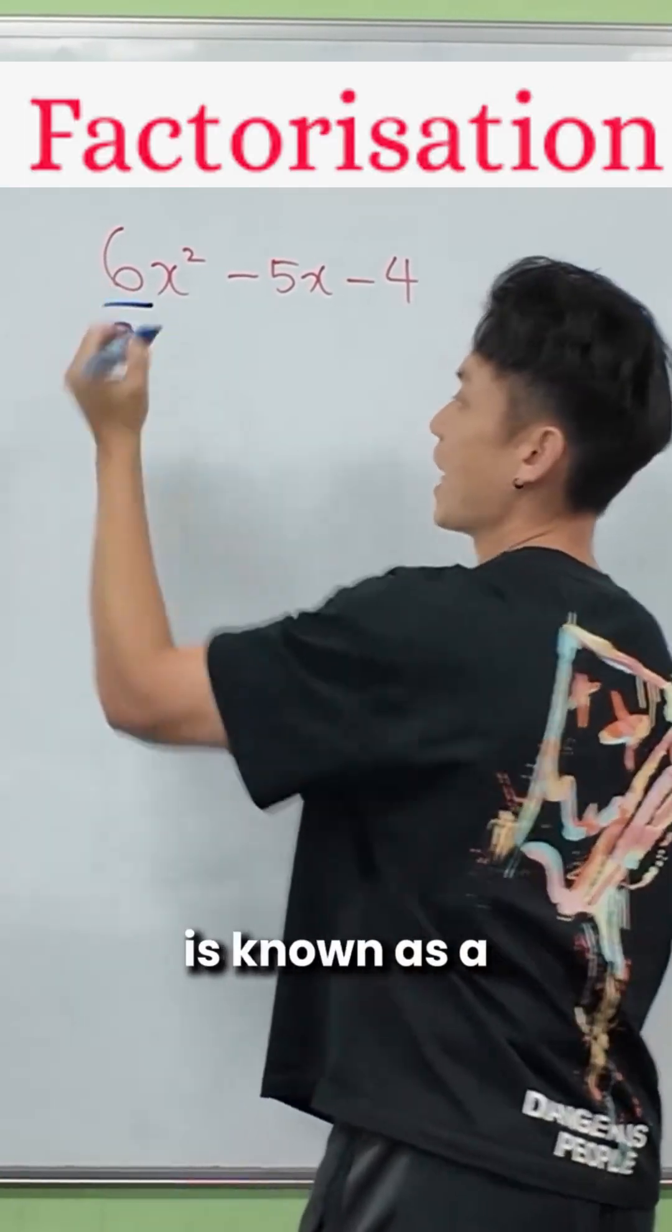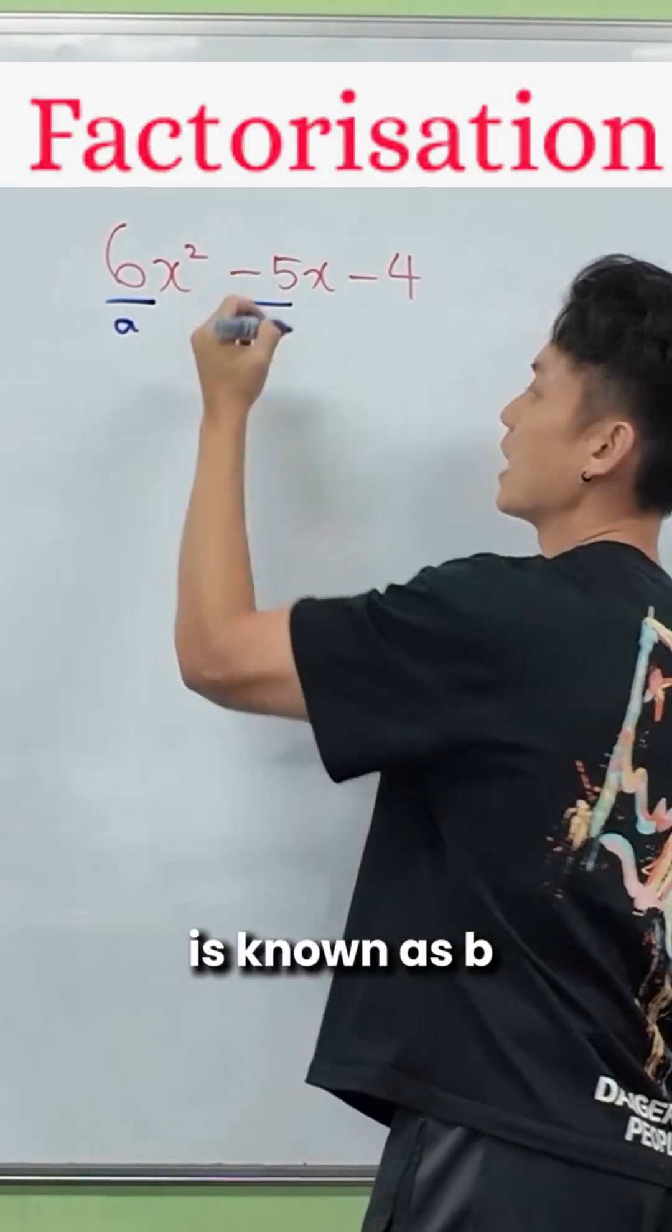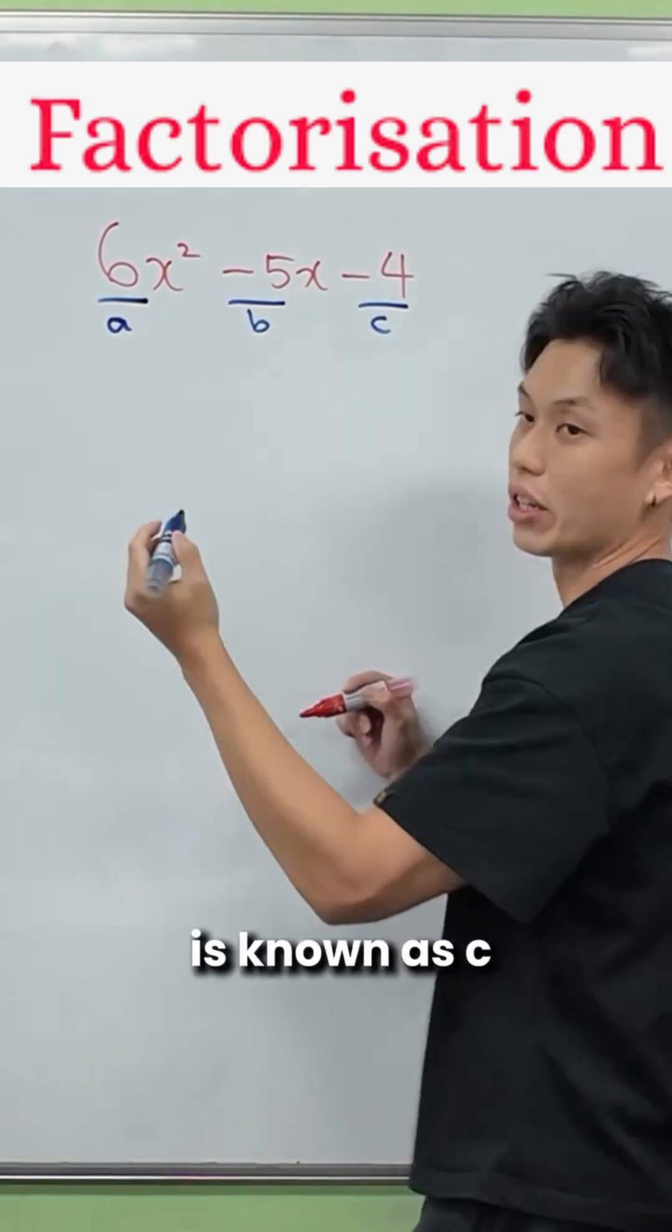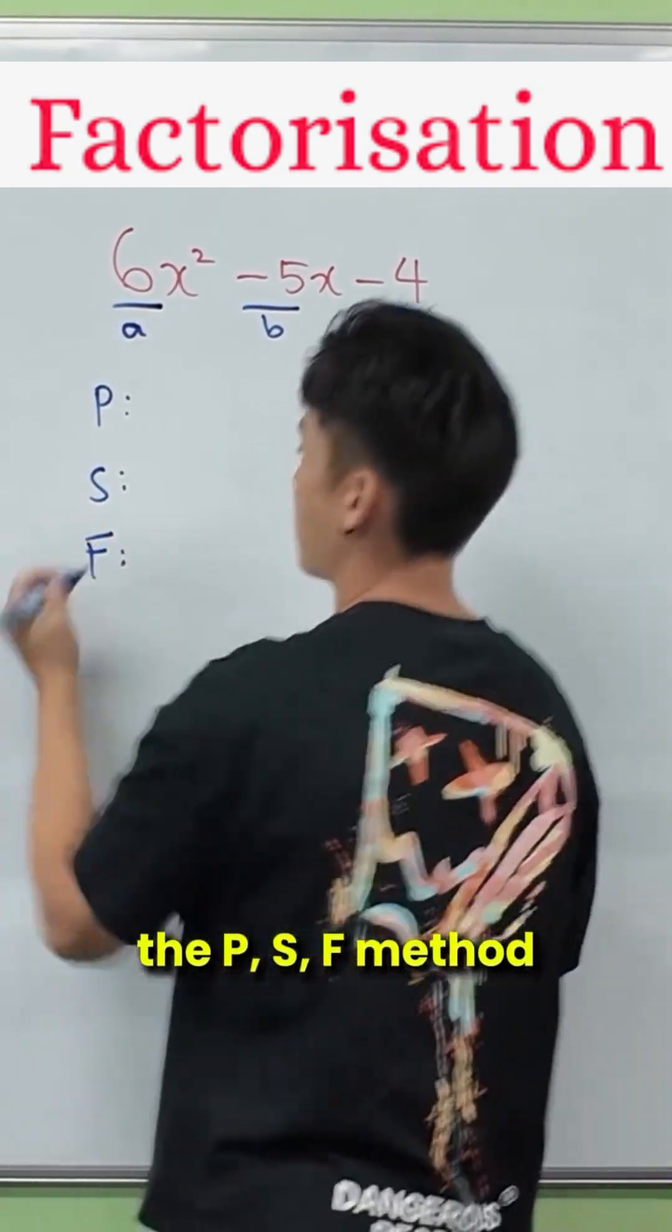Remember that the number in front of x squared is known as A, the number in front of x is known as B, and the constant term is known as C. We will now use the PSF method.